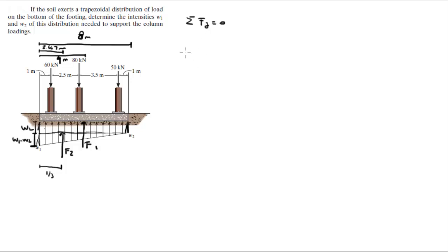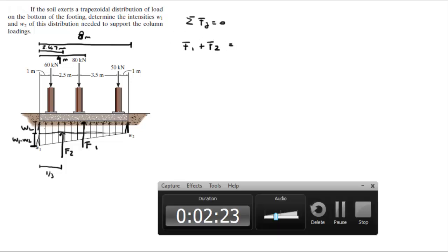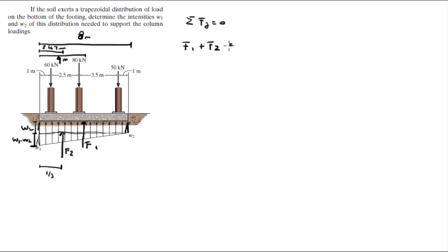The first thing that you gotta do is you have to add all the forces. F1 plus F2 is equal to the sum of these three forces: 60 plus 80 is 140, plus 50 is 190, so you got 190 kilonewtons. F1 plus F2 is equal to 190.